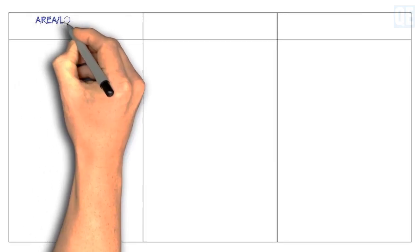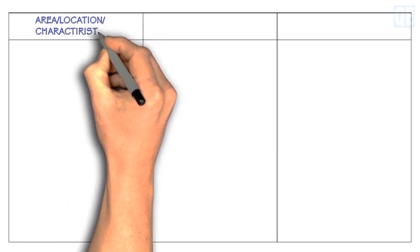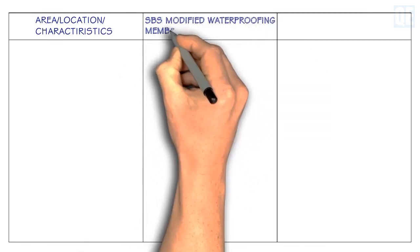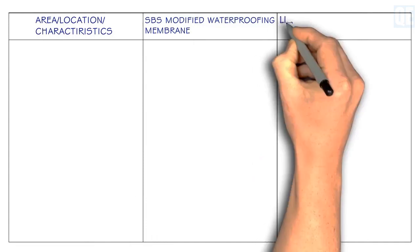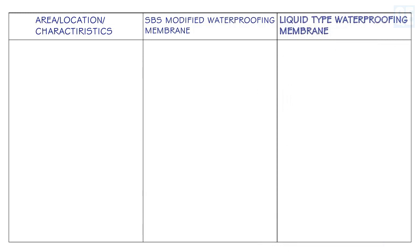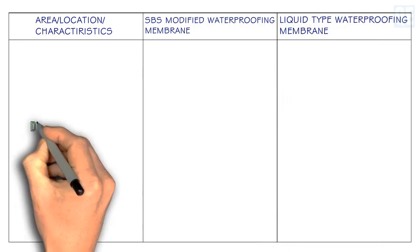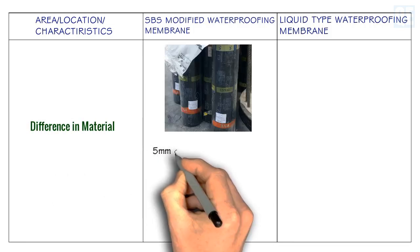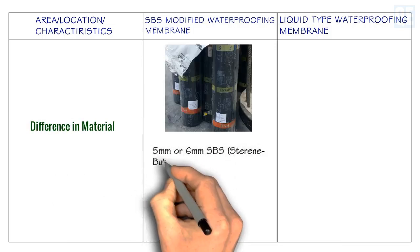I'm going to present a table so that it will be easy to understand. In this table you have the area, location, or characteristics on one side, and then SBS modified waterproofing membrane and liquid waterproofing membrane as the two columns.